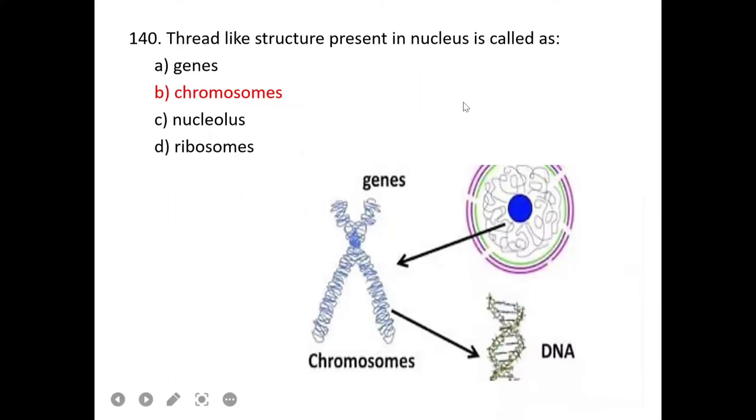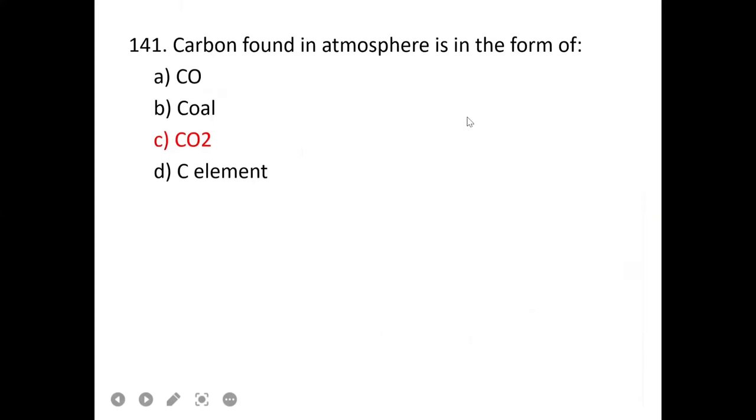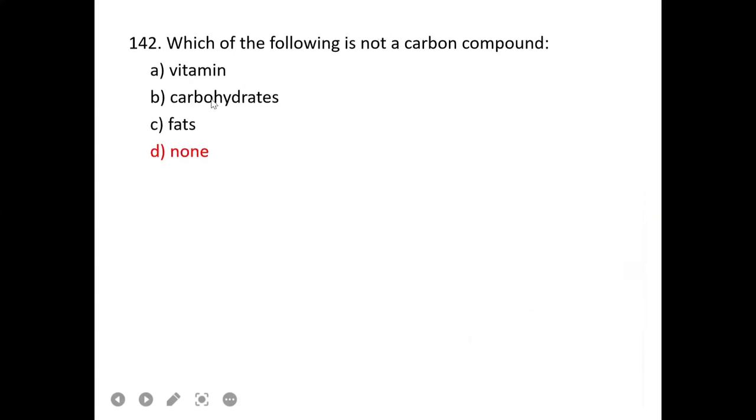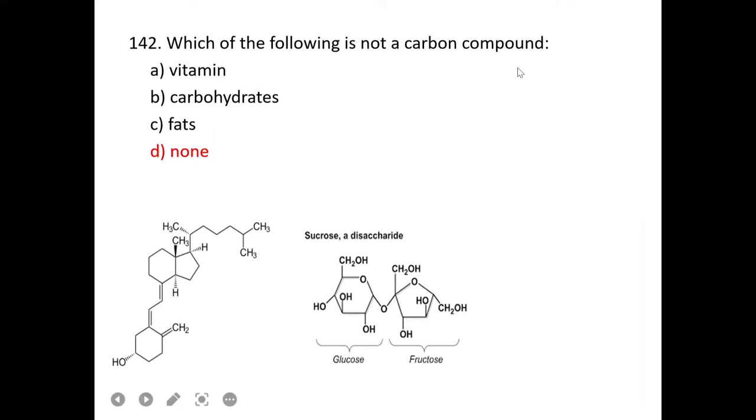Achondroplasia causes dwarfism. It is basically a bone growth disease where arms and legs cannot grow completely. C is correct. Gall crown disease in plants is caused by Agrobacterium tumefaciens. This causes growth on stems and roots.